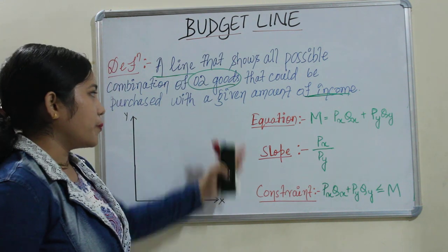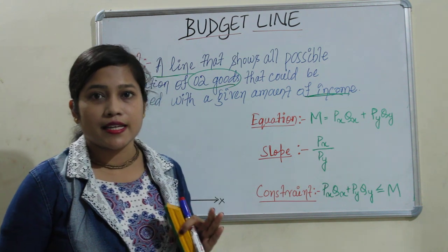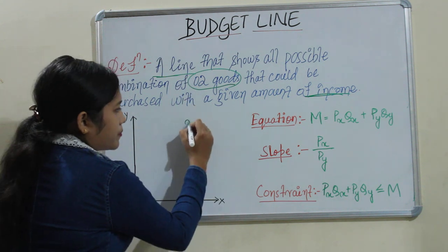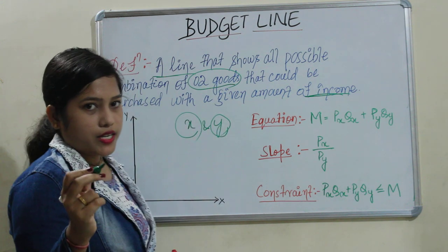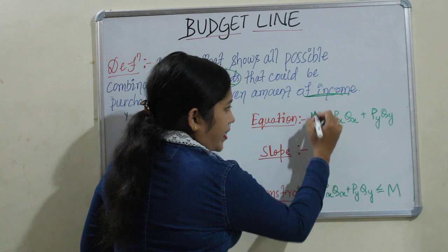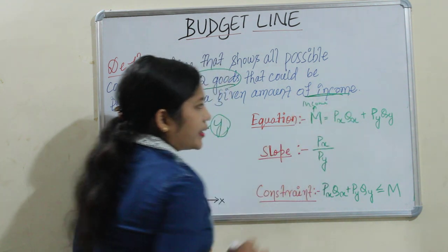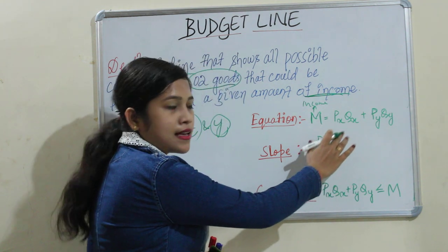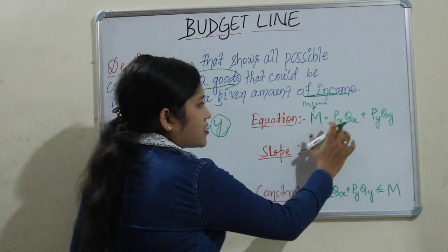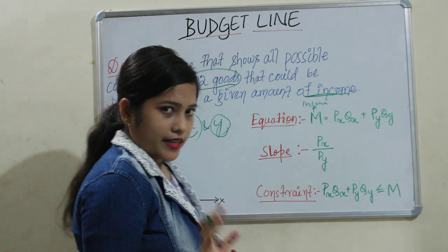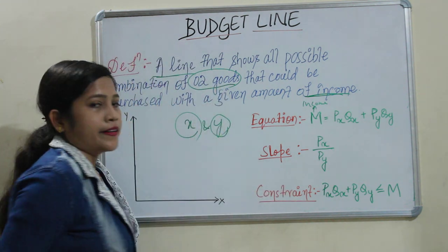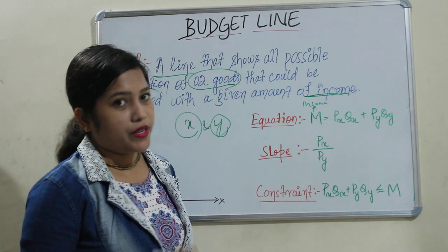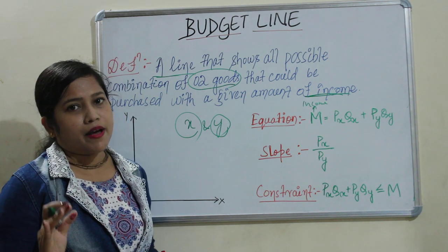Getting the definition? Coming to the properties. How we will write the equation of a budget line? I have told you two goods — let's say those two goods will be X and Y. One good is X, one good is Y. So the equation will be M. M is your money income. Your income equals Px into Qx, where Px is your price and Qx is the quantity you have purchased. So: M = Px·Qx + Py·Qy. Next is the slope of the budget line. Every curve has a slope — the slope of the budget line is Px divided by Py, that is price of X divided by price of Y.